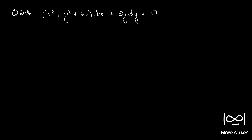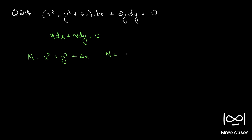Question 214. The given equation is x squared plus y squared plus 2x times dx plus 2y dy equal to 0. This is in the form M dx plus N dy equal to 0, where M is x squared plus y squared plus 2x and N is 2y.